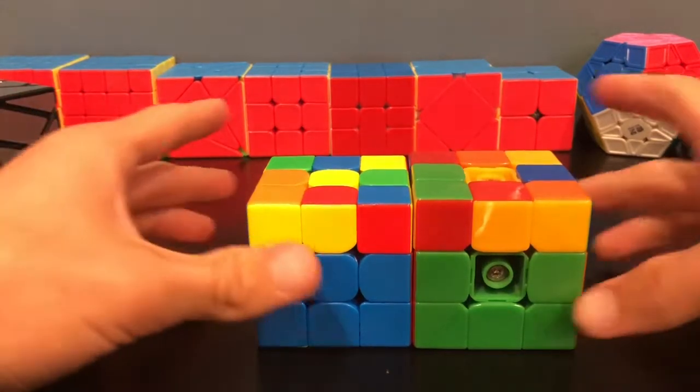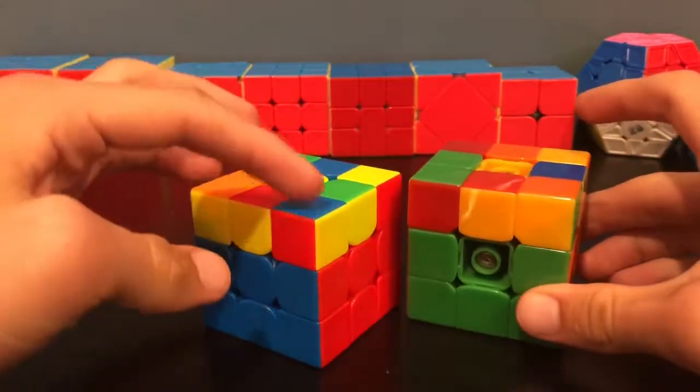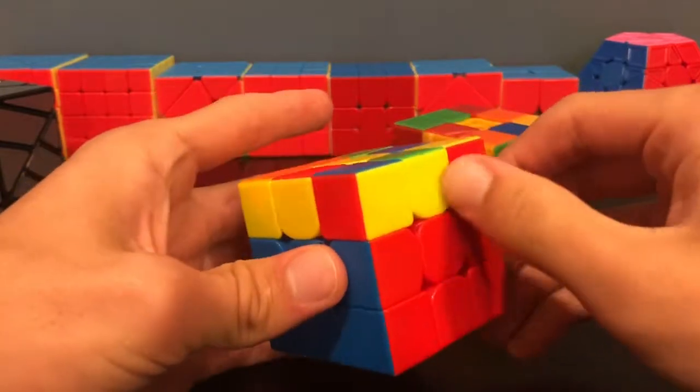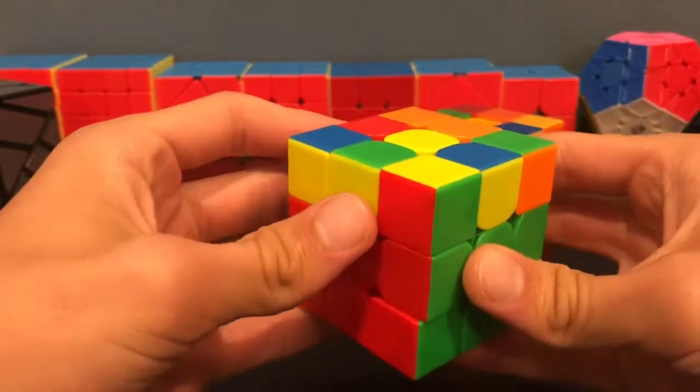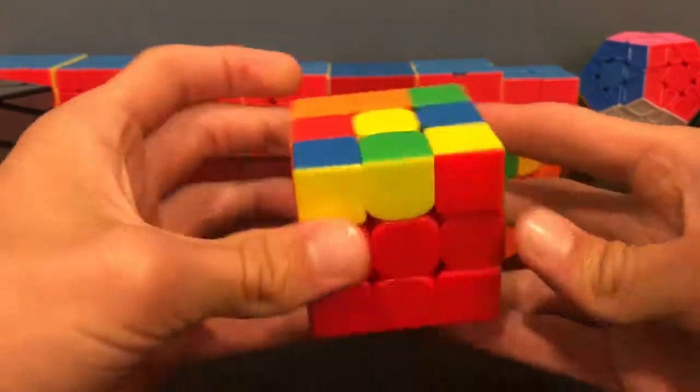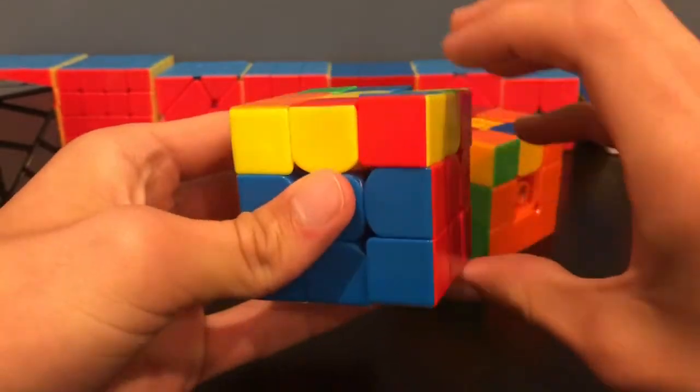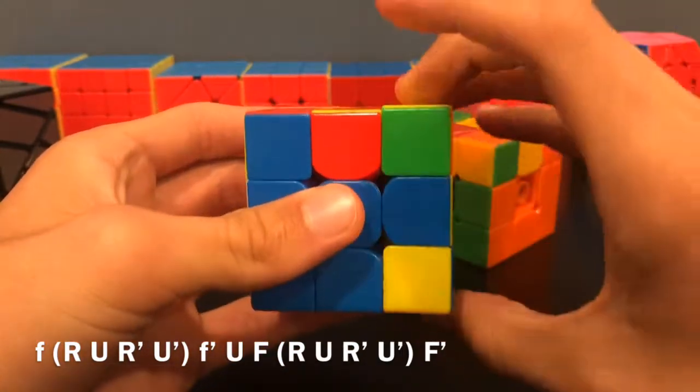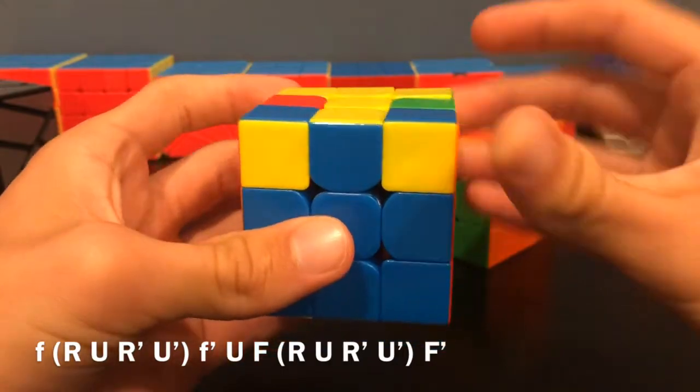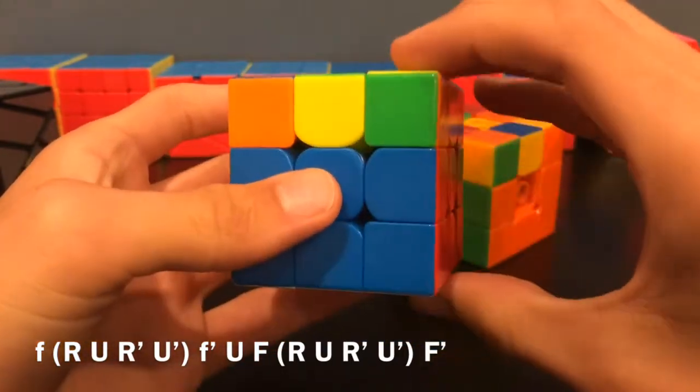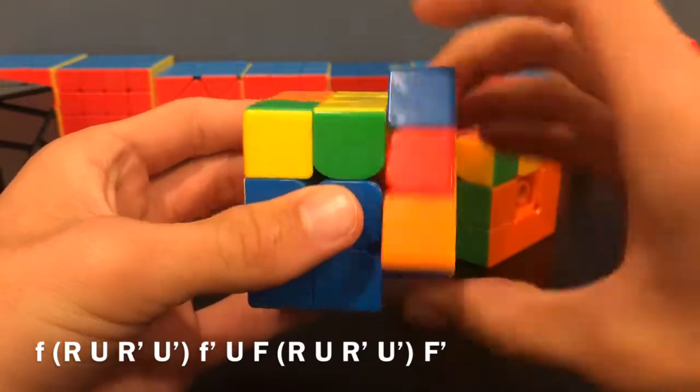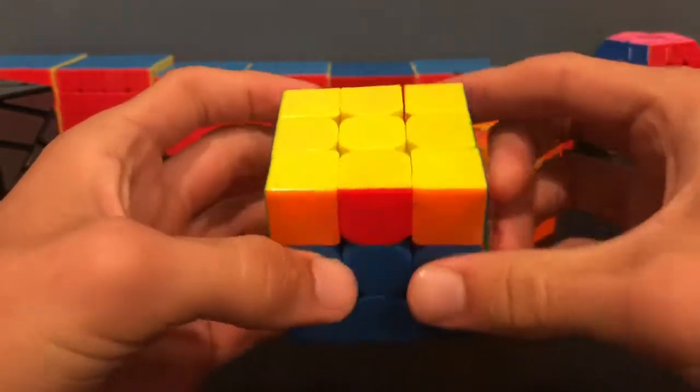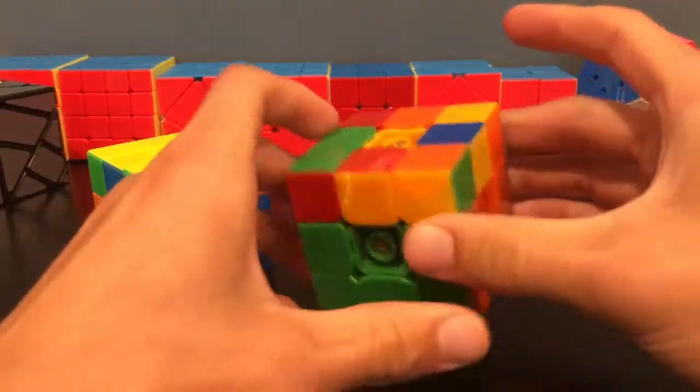The algorithms for these next two cases are very similar as well. At first glance these might seem like the same case, however one is an anti-sune and one is sune. For this one, where bars are being created on the left, you'll hold the corner back here and do this algorithm: F-wide R U R' U' F-wide', then U F R U R' U' F'.